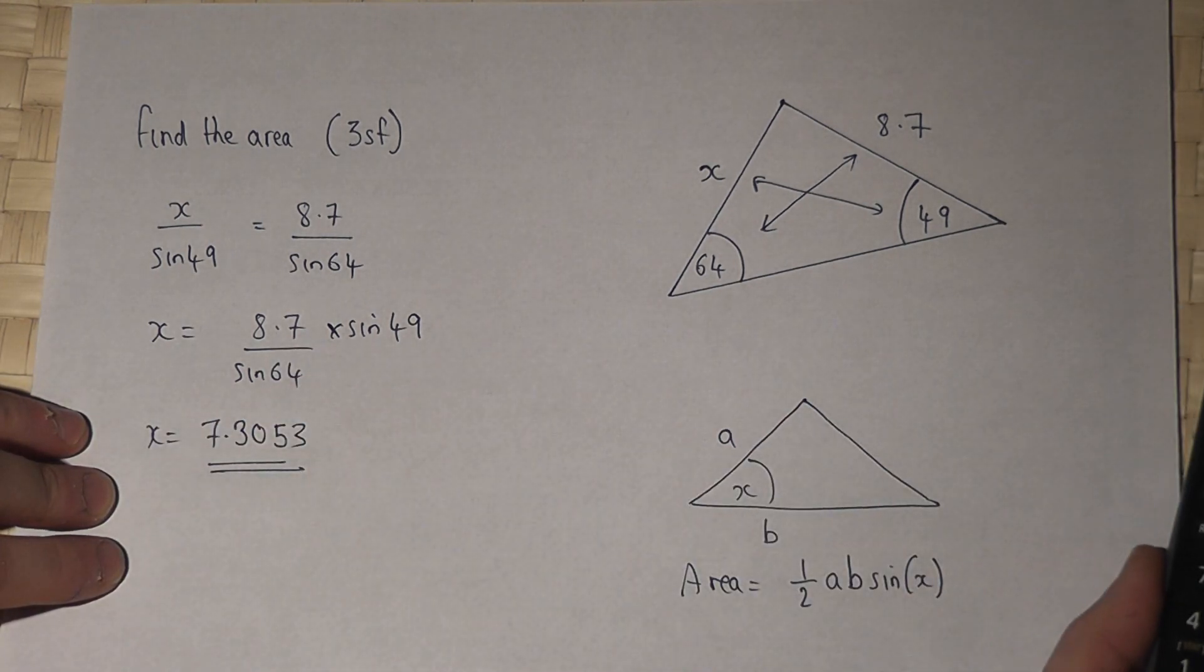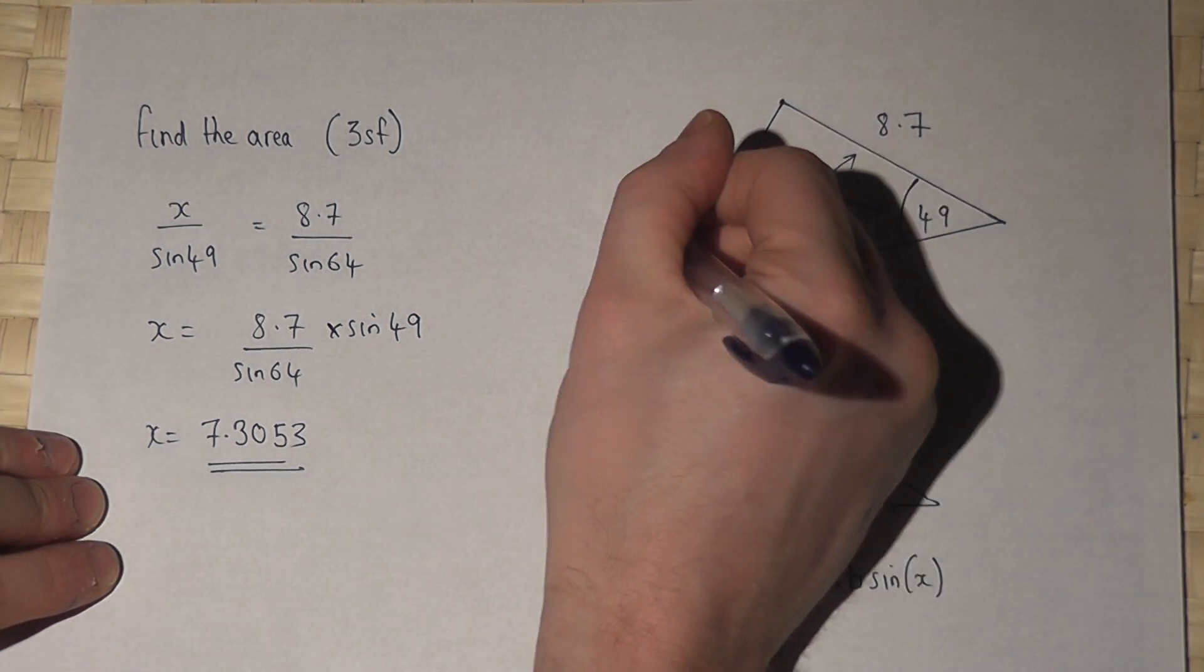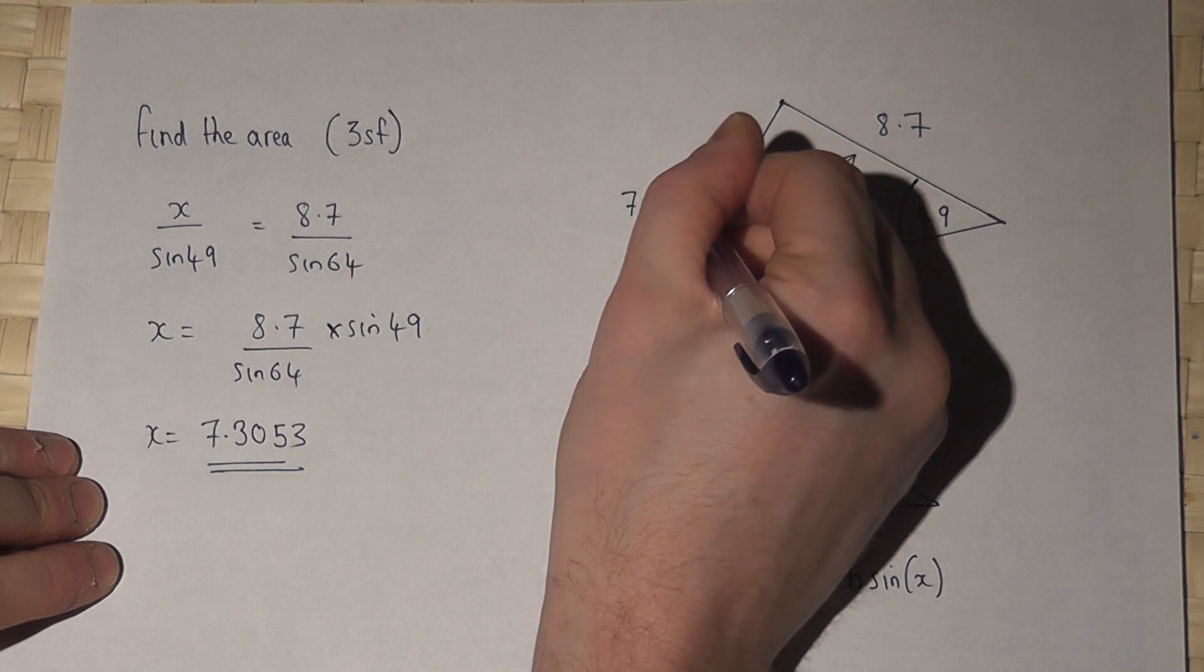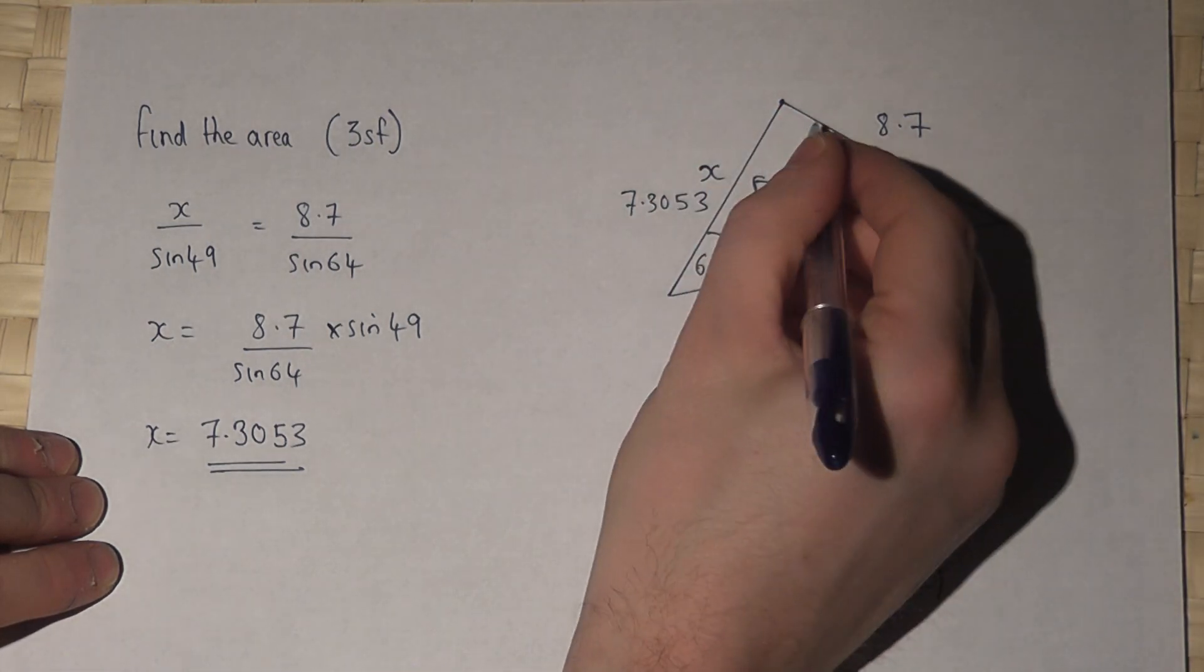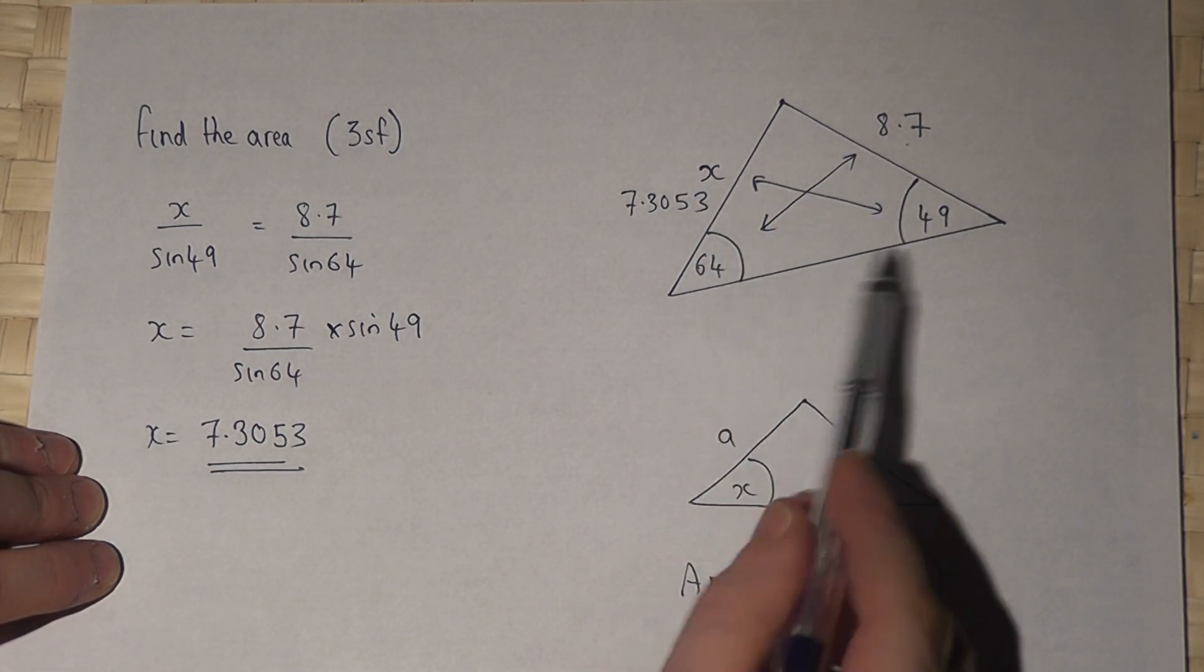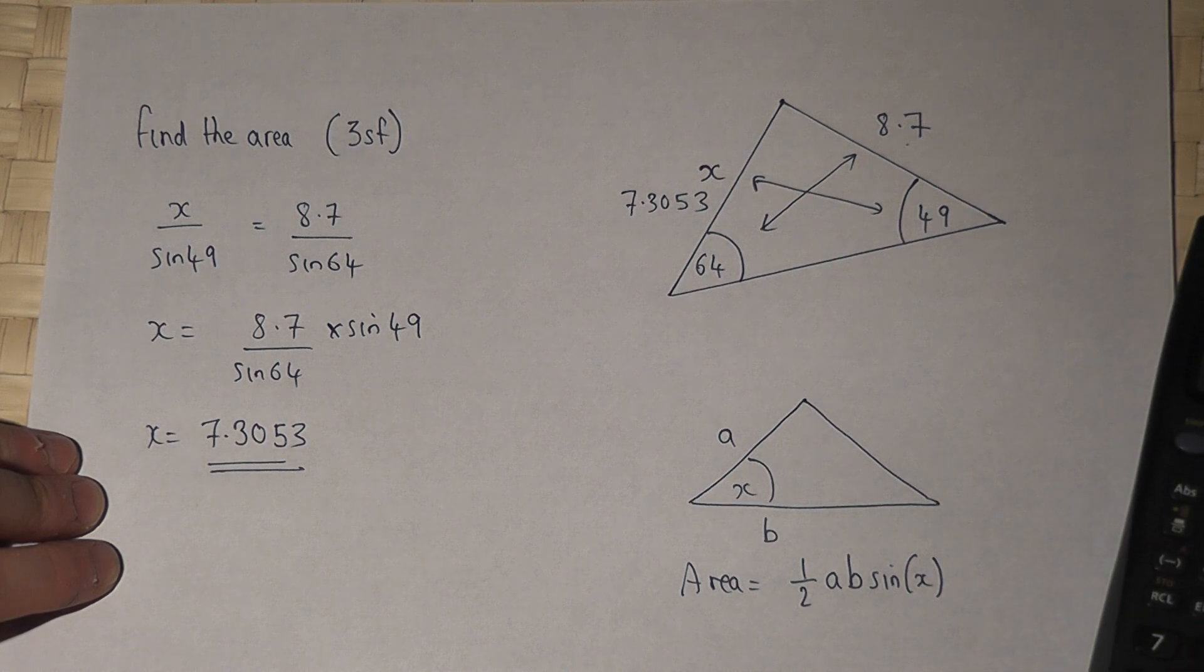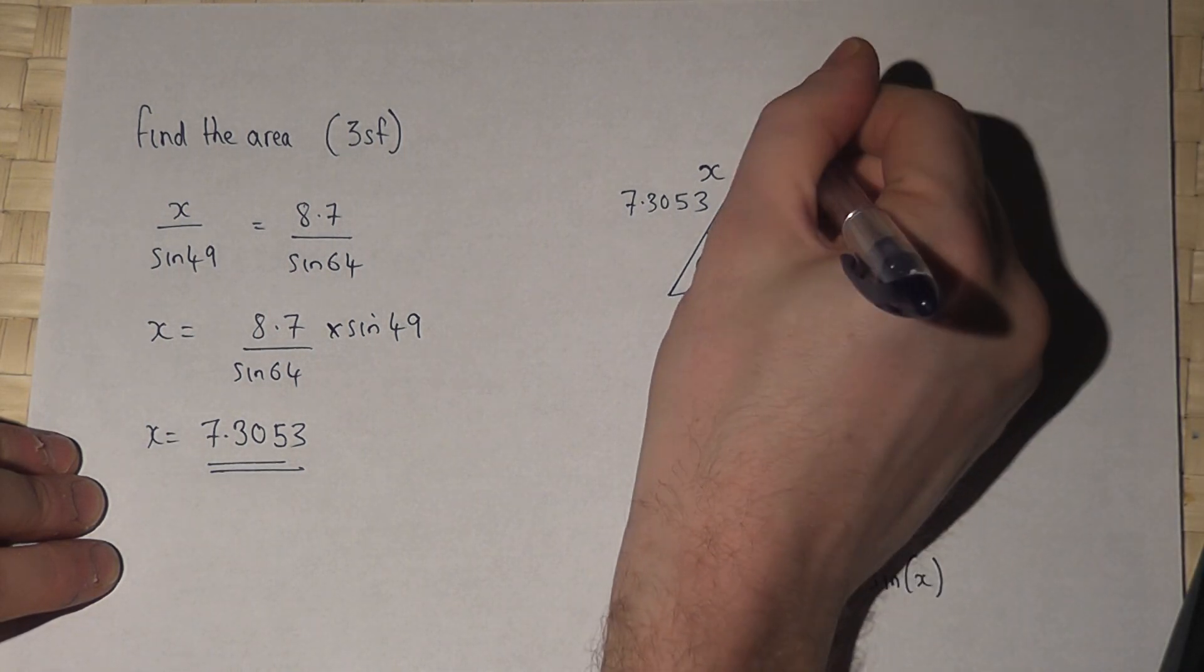Now then, I therefore know X. So if I know the angle contained within, then I'll know two sides and an angle. But I can find that angle. So if I do 180, take 49, take 64, then I can find the angle here to be 67.